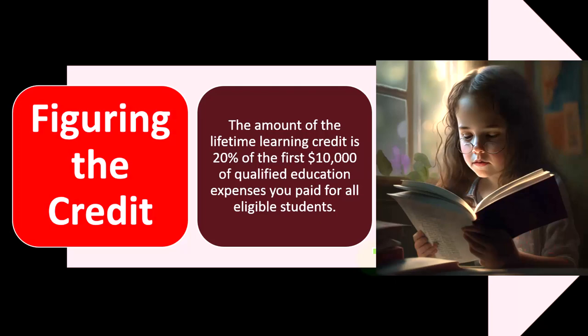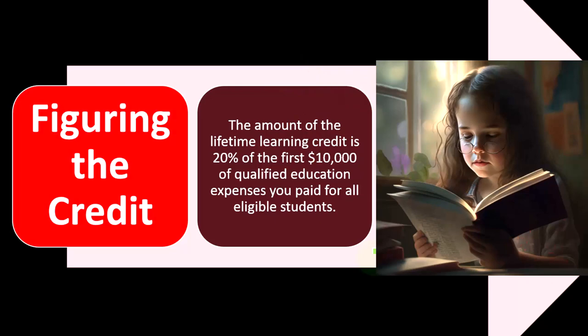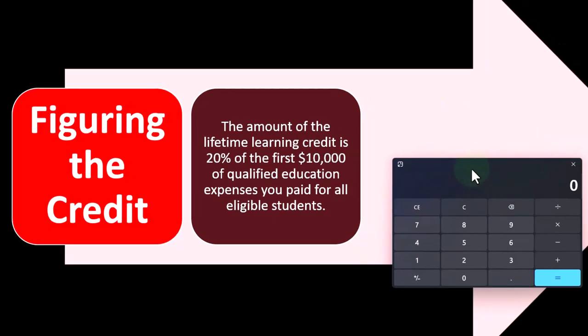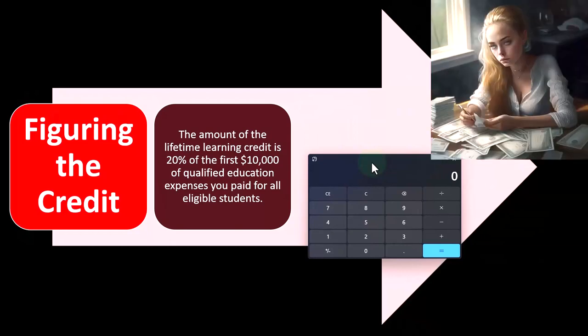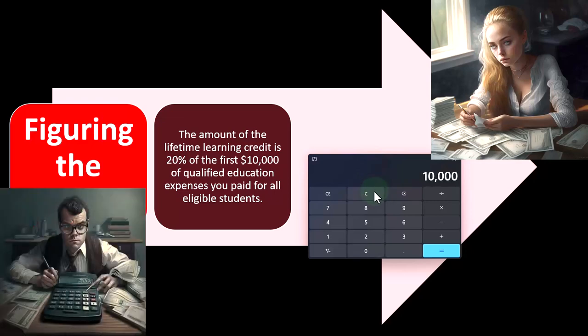We talked about the American Opportunity Credit in prior presentations. The amount of the lifetime learning credit is 20% of the first $10,000 of qualified education expenses you paid for all eligible students. Once we have the education expenses, we calculate the credit: 20% of $10,000 gives us a $2,000 credit — the maximum amount of the credit.